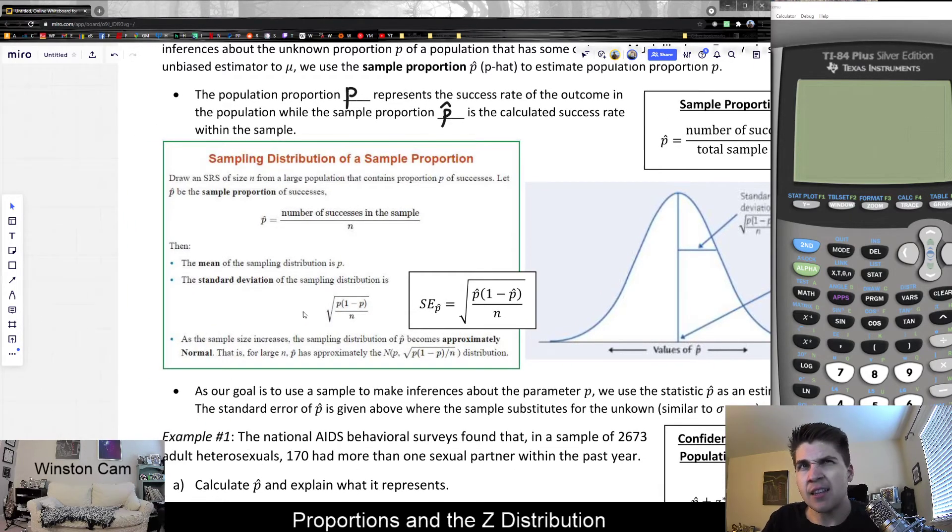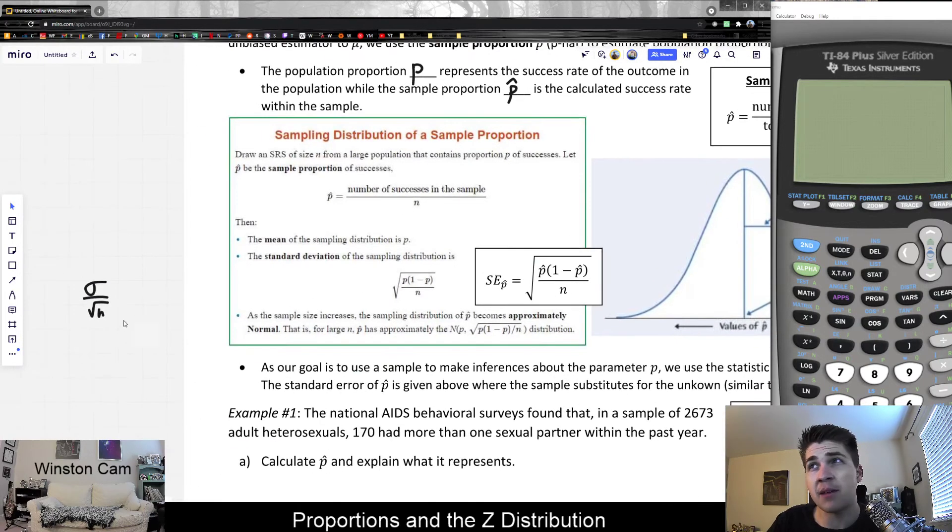This is a little bit different, but it's not really so different than when we first talked about z distributions. If you remember, standard deviation before was what's the standard deviation of the actual population divided by the square root of n?